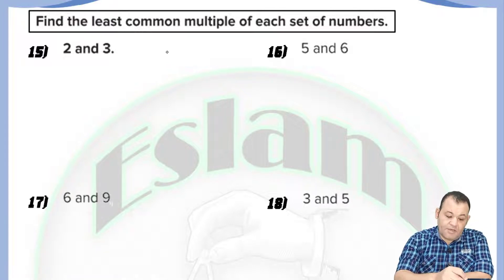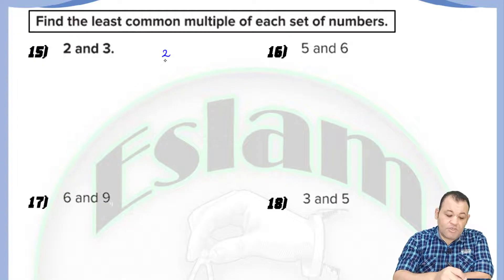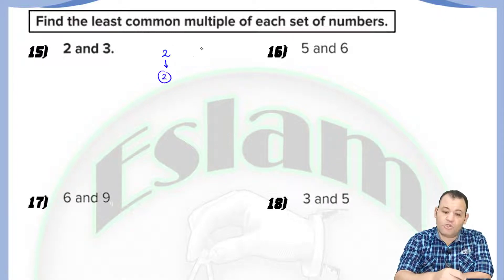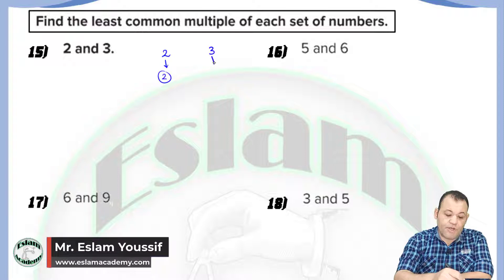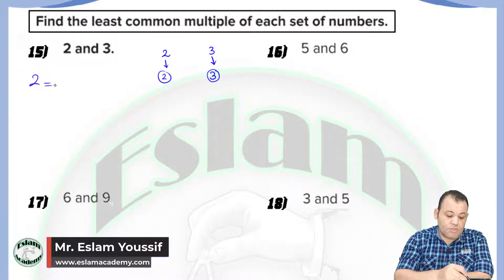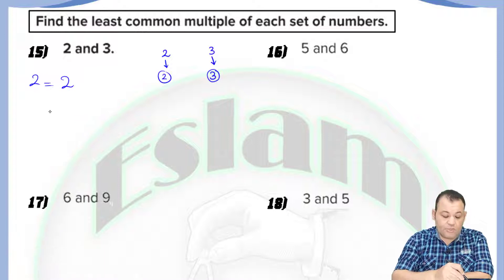How can we find it? Number one, I will start with factorization. Since 2 is a prime number, its factors are 2 and 1, so I'll just write 2. Since 3 is a prime number, I'll write 3. So 2 equals 2 and 3 equals 3.